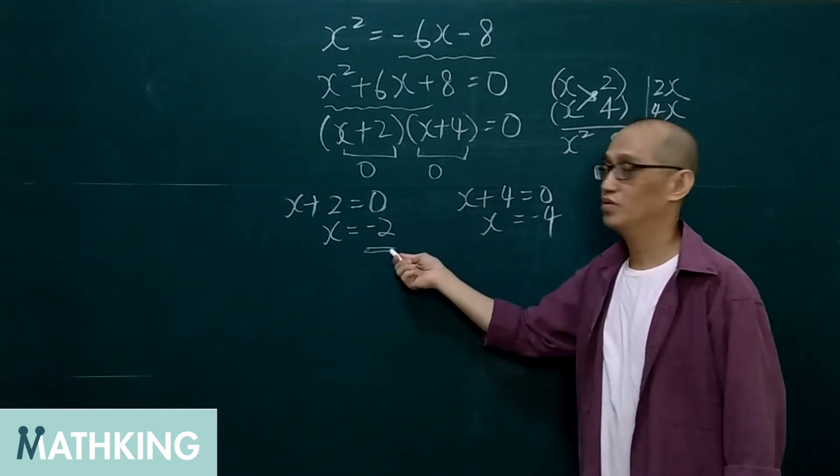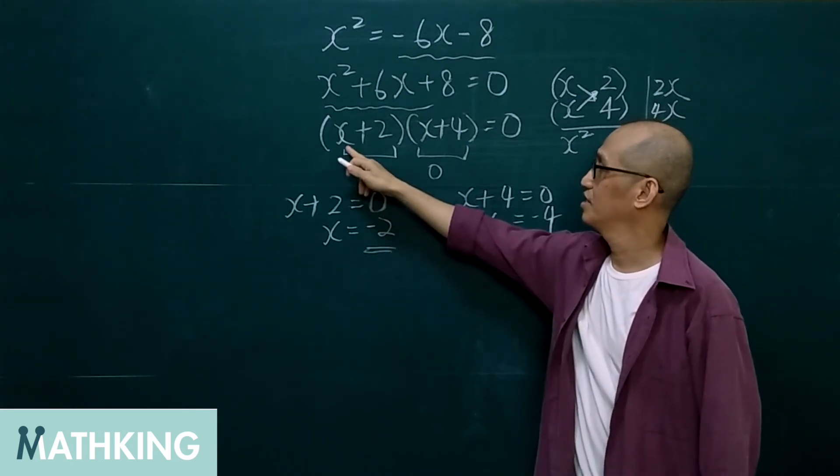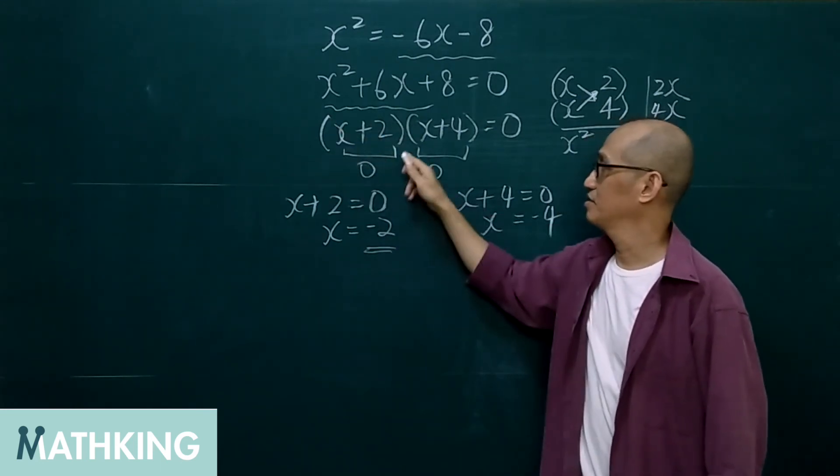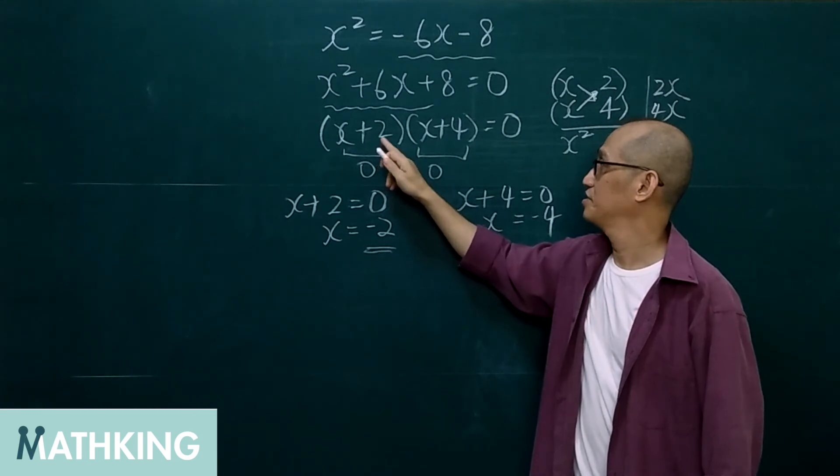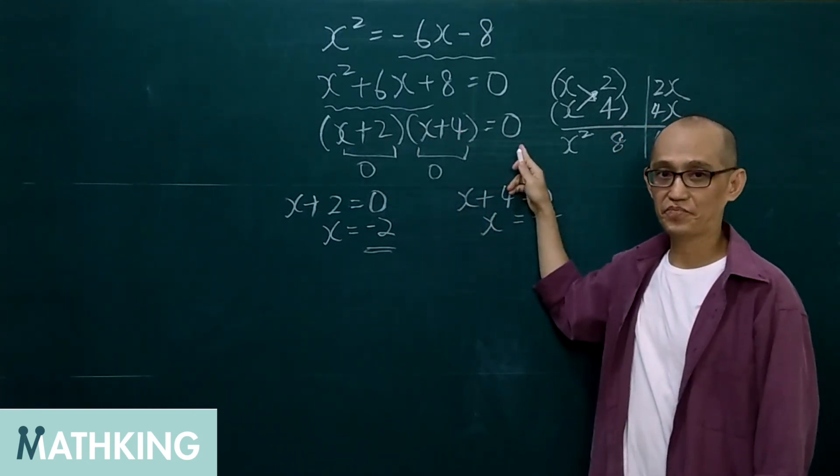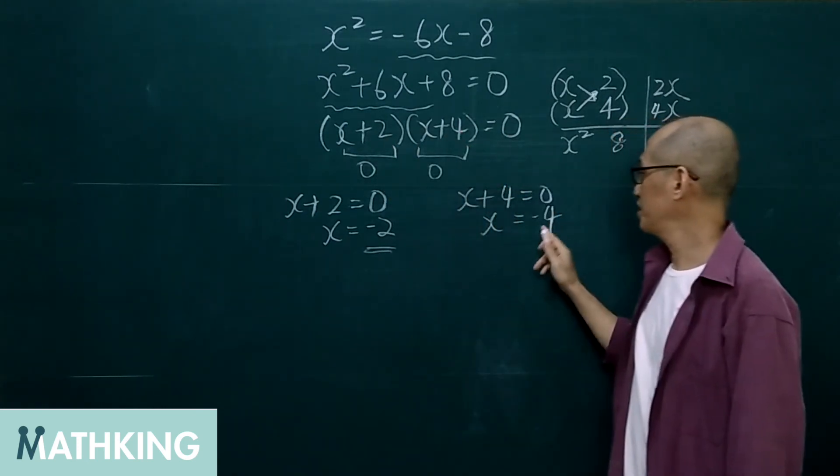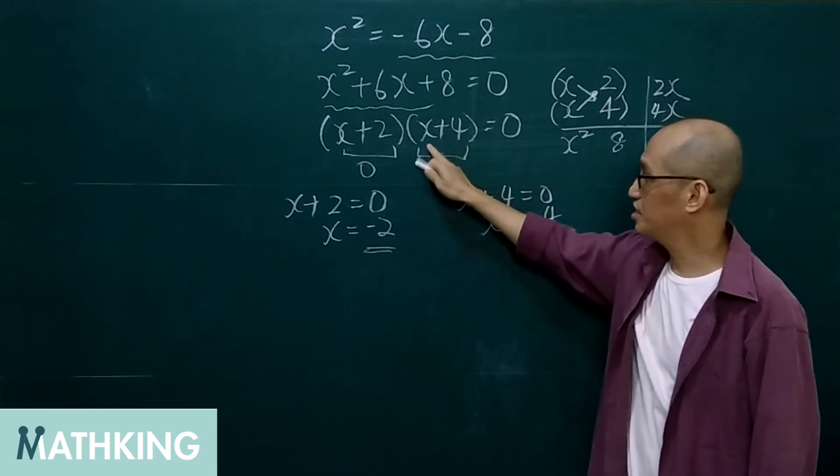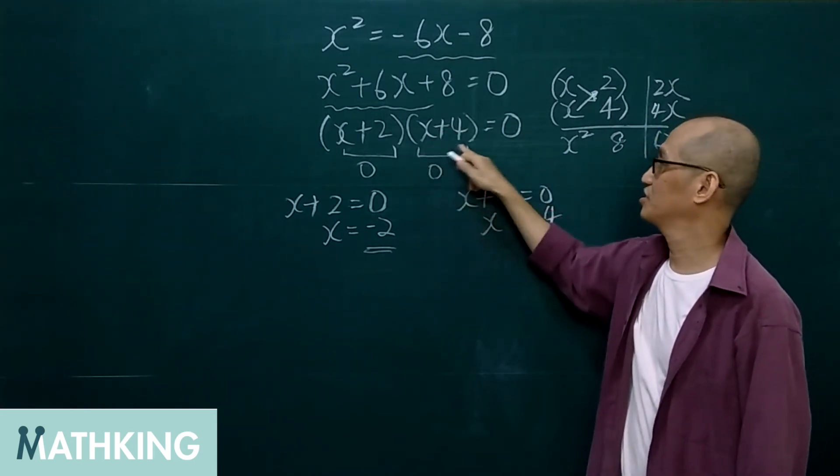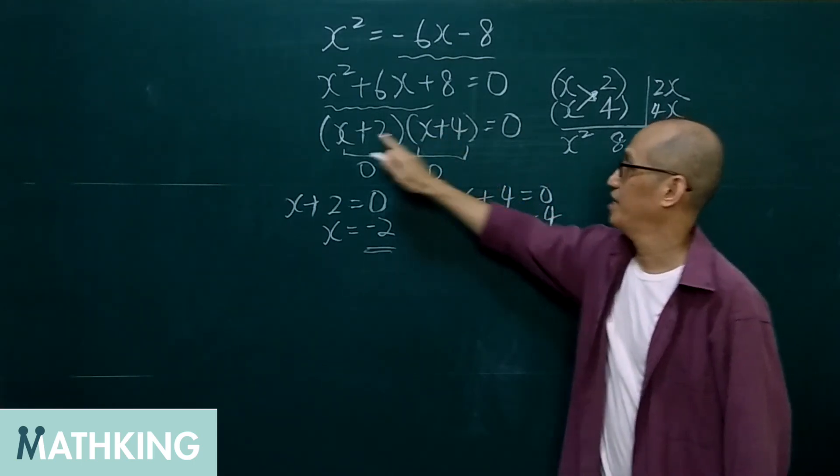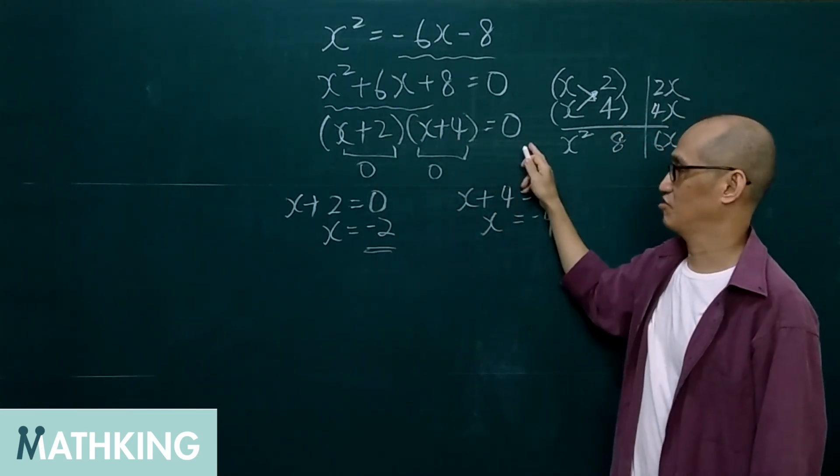If we substitute this negative 2 into here, then this one becomes 0. And this one becomes 0, and this times 0 equals 0.